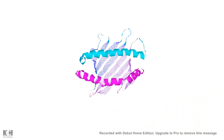Haptens are not immunogens by themselves because haptens are too simple. When antigens are going to be presented to the T-cell receptor, they have to be served on the platter on MHC class 2. MHC class 2 has a peptide binding groove that binds to 16 to 18 residue-long amino acids. A hapten like a benzene ring-like structure is too simple to specifically bind to the groove of MHC class 2 and be presented as an antigen — it hardly binds with specificity to MHC class 2.